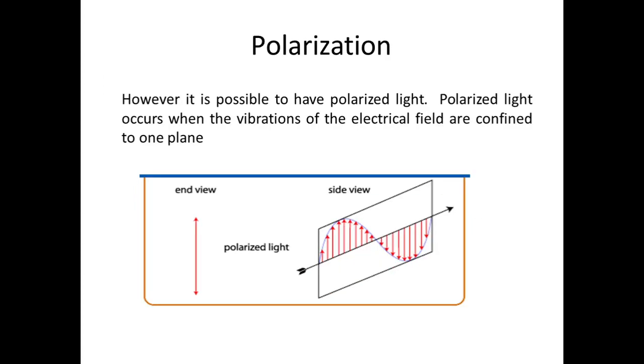There are possibilities to polarize this light, and polarized light occurs when the vibrations of the electric field are confined in one plane. As previously discussed, the electric field can vibrate in all directions and can be polarized by aligning them in only one plane.